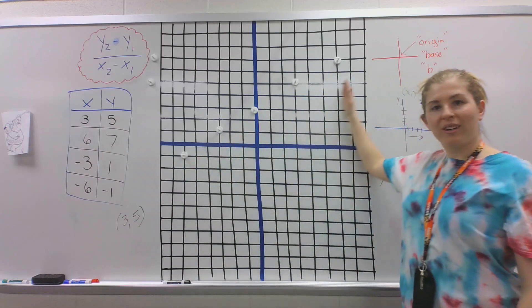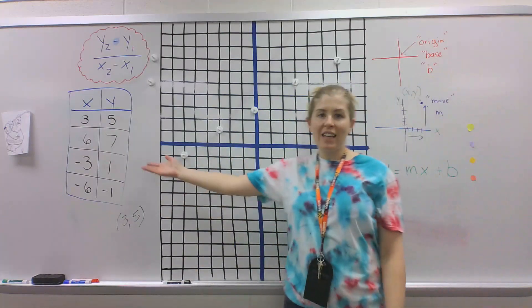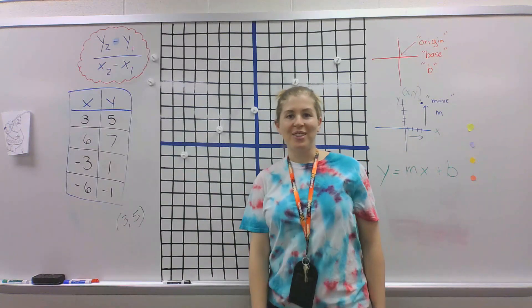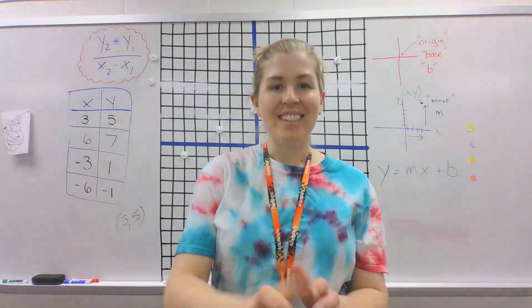Does that look like a more consistent smooth line? Awesome. This is how to graph points from a table. Let me know if you have any questions. Thank you.